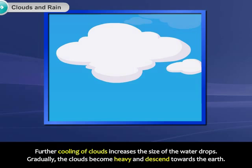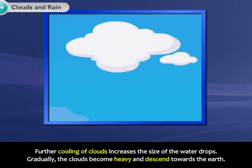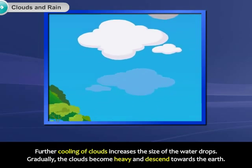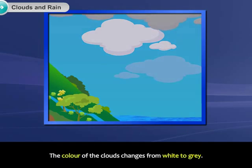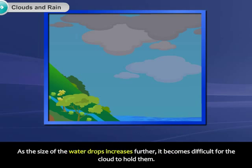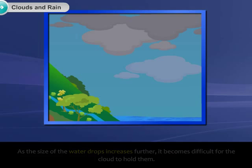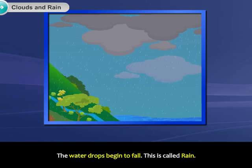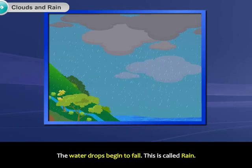Gradually, the clouds become heavy and descend towards the earth. The color of the clouds changes from white to grey. As the size of the water drops increases further, it becomes difficult for the cloud to hold them. The water drops begin to fall. This is called rain.